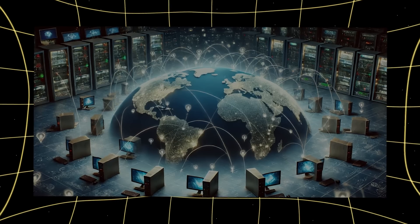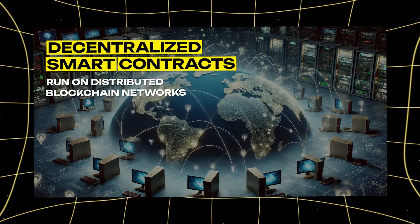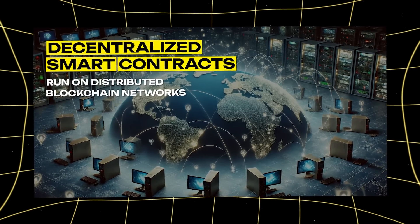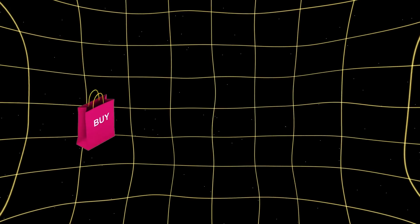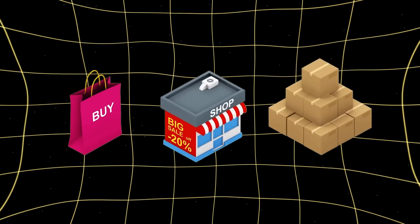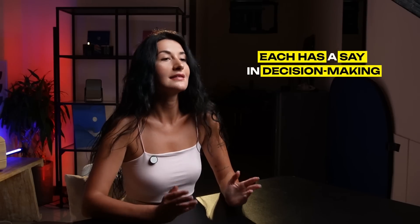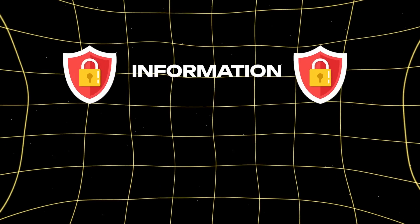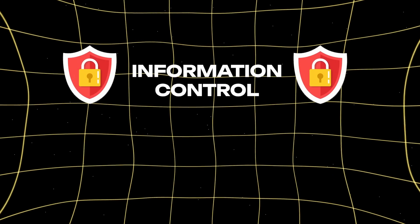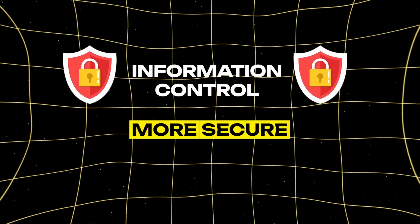On the other hand, decentralized smart contracts operate in distributed networks, such as blockchain. This is more like a network of small businesses where each has a say in decision-making. Information and control are spread across many nodes, making them more secure and independent.